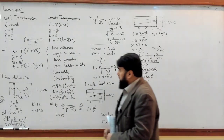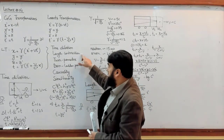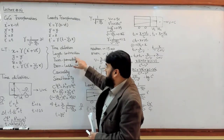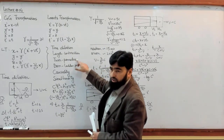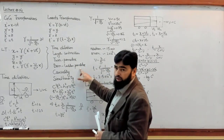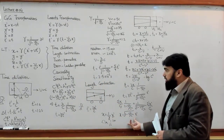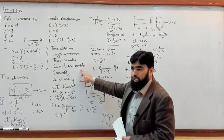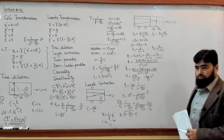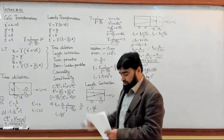Now let us come to the length contraction and then discuss the twin paradox, and then we will come to the barn and ladder paradox. Actually, since we are done with length contraction, we will first discuss the barn and ladder paradox and then the twin paradox. What is the barn and ladder paradox?